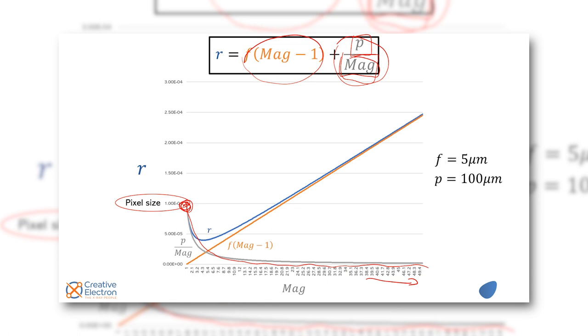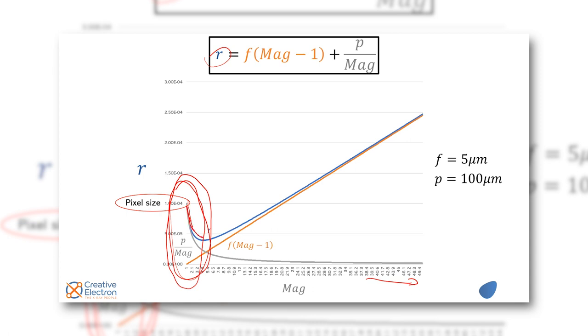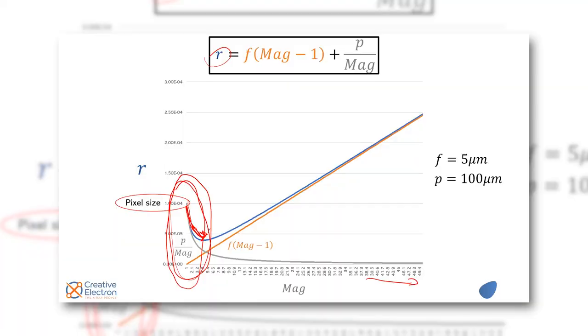Now when you put it all together, that's our blue line here. What we see is that for small magnification the detector drives the resolution. As we increase magnification our resolution gets better and better and better because we follow this great curve here, gets better until the focal spot takes over.